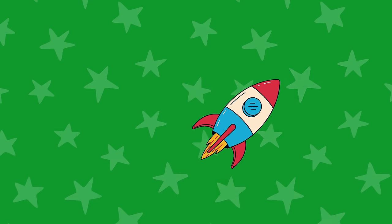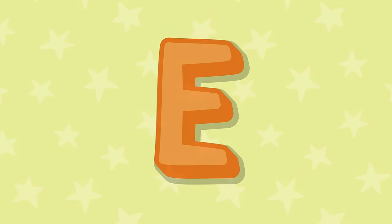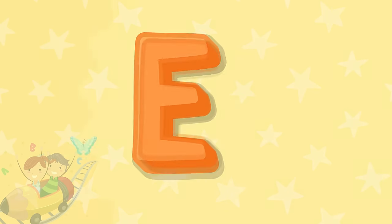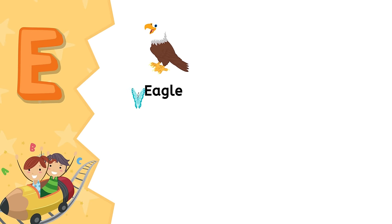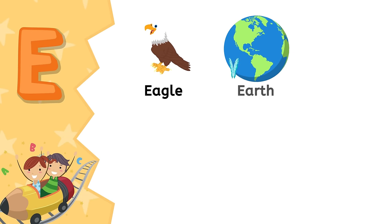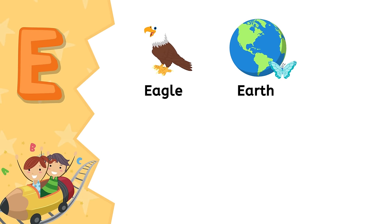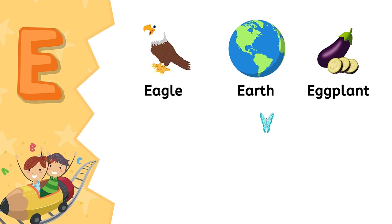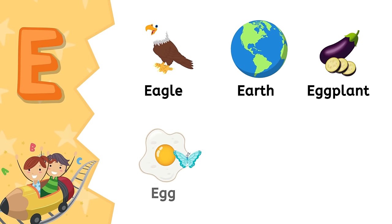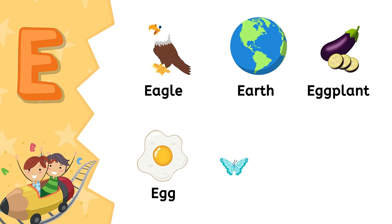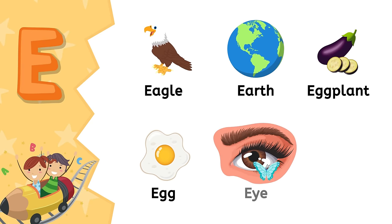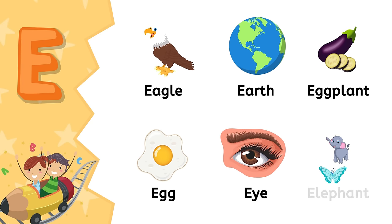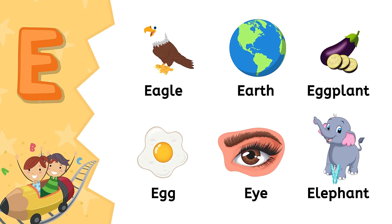Ready for more alphabet fun, kids? E. E is for eagle. E is for earth. E is for eggplant. E is for egg. E is for eye. E is for elephant.